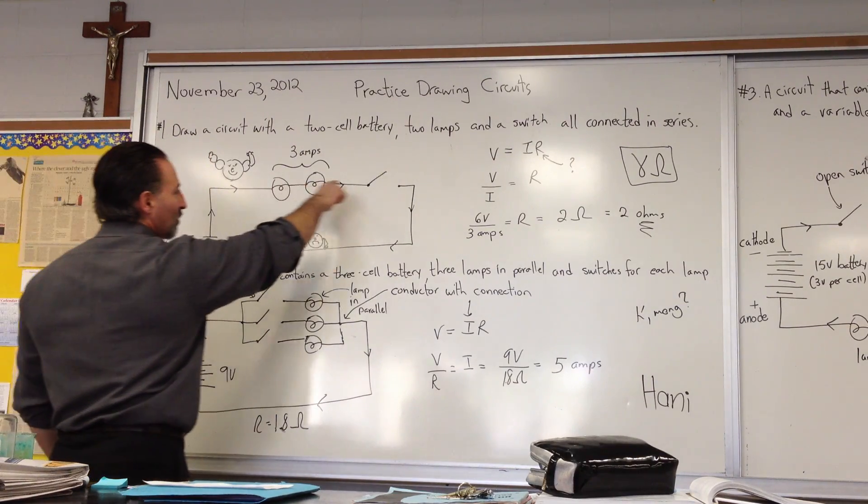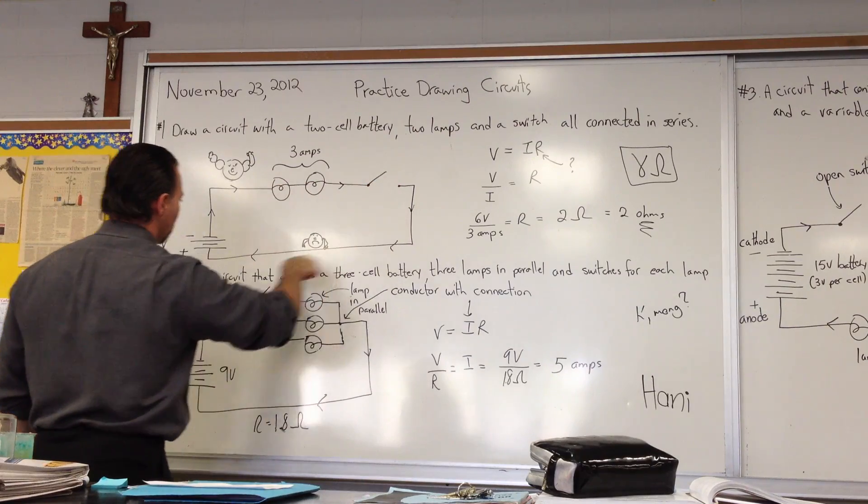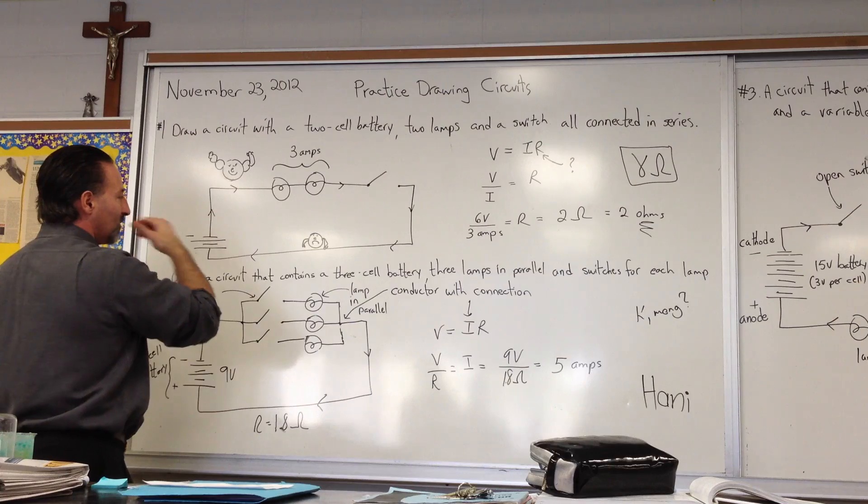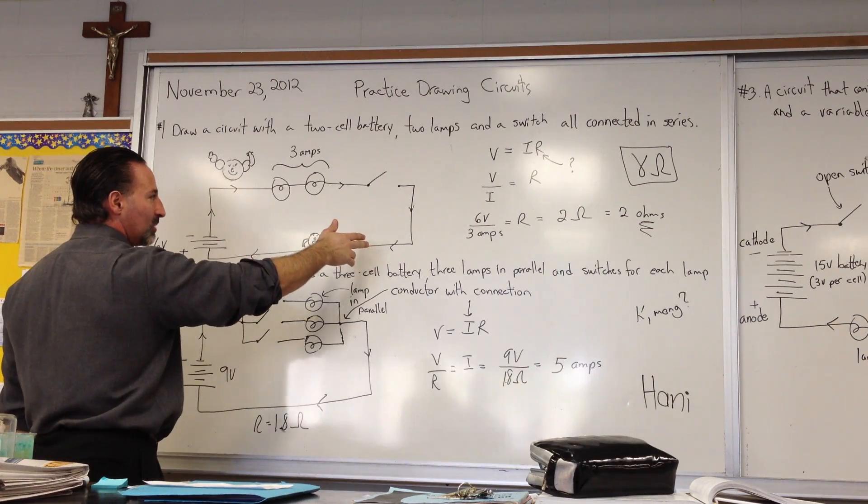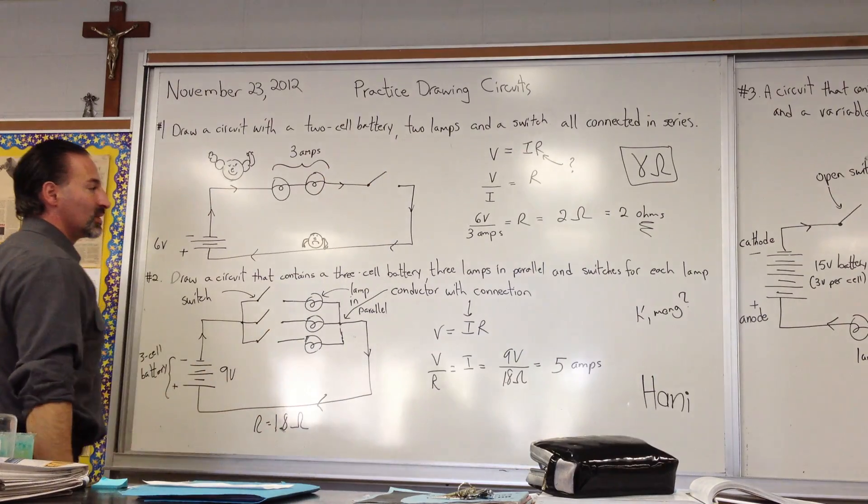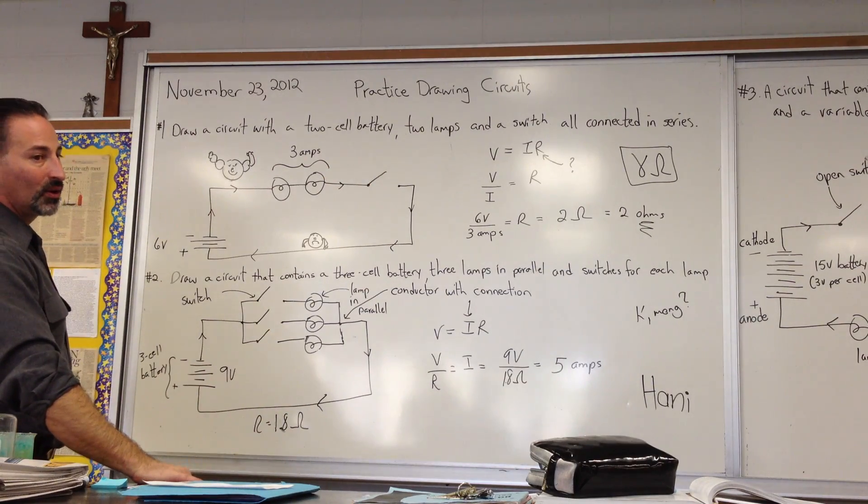Whenever electrons flow through a circuit, they go from the negative side of the battery, through the circuit, back into the positive side of the battery. And if the circuit is broken at any point, if it's not continuous, then the circuit is open, and no electricity flows.